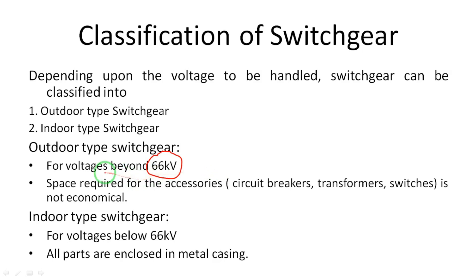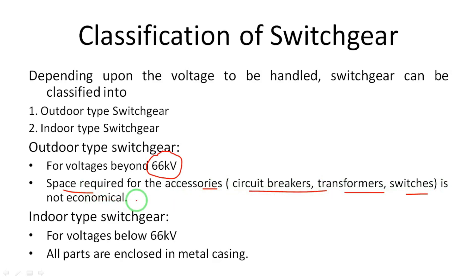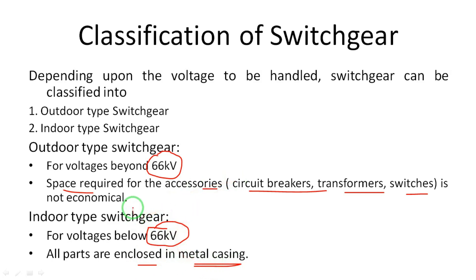Outdoor type switchgear is used for beyond 66 kV because it requires large accessories that also require large space, so it cannot be used in an indoor system. These accessories include circuit breakers, transformer switches — they are large and not economical for indoor use. For below 66 kV systems, the accessories are of enclosed type, enclosed in metal casing, so they can be used in indoor type switchgear systems.